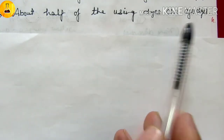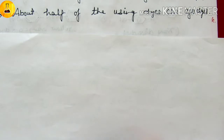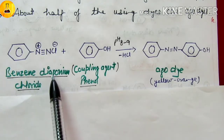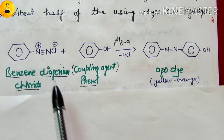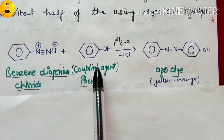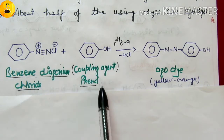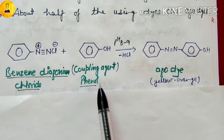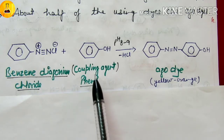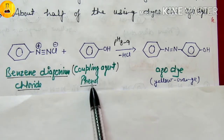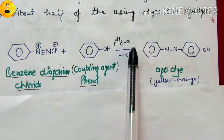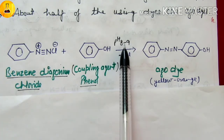Now we know how to make azo dye. Here we have a general reaction. This is our Benzene Diazonium Chloride salt. This reaction is done with phenol — we have phenol, aniline, or naphthols as coupling agents. We have taken phenol here. The medium is slightly alkaline, pH 8–9, moderately basic.